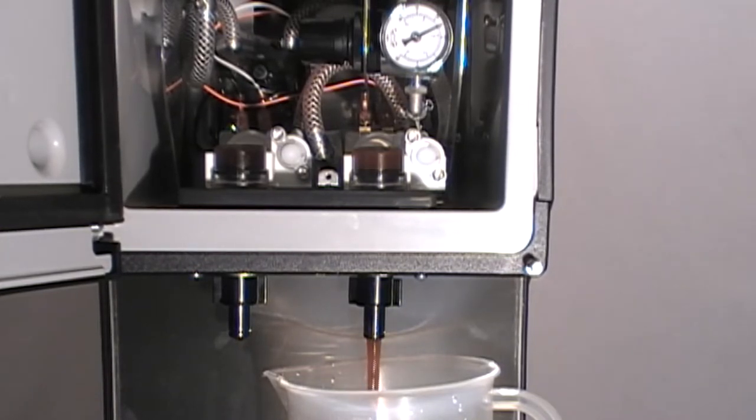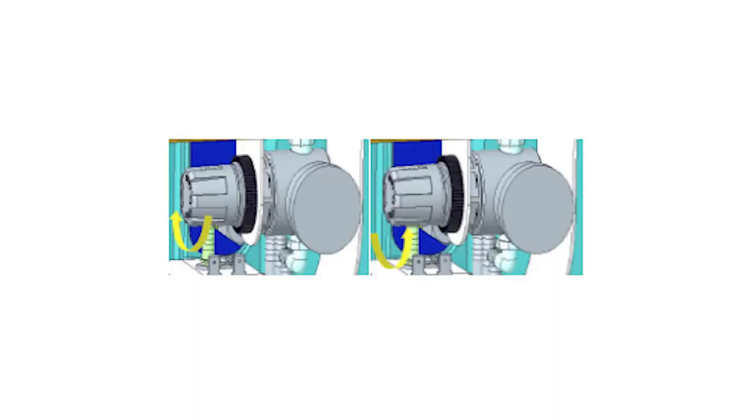When making any pressure adjustment, turn the knob no more than an eighth turn increment for either direction, then discard the first drink after the adjustment and evaluate the second drink. When done making adjustments, push the black knob in to lock regulator setting.